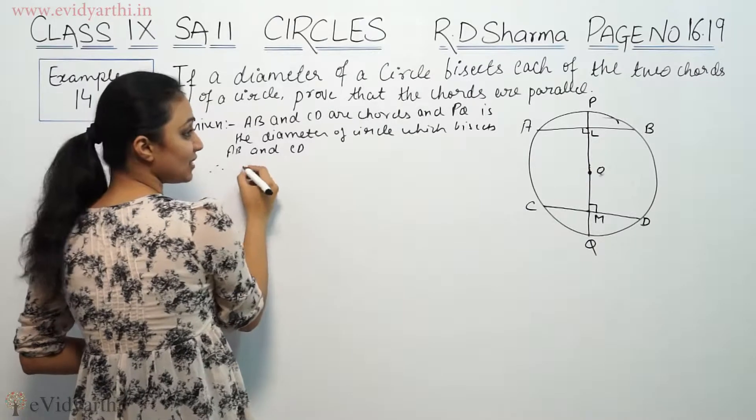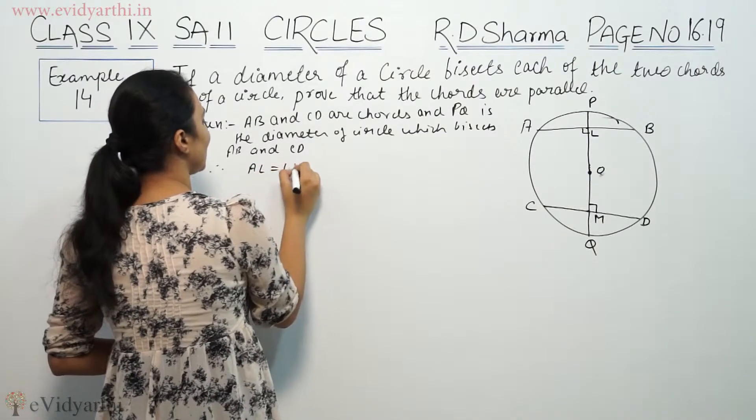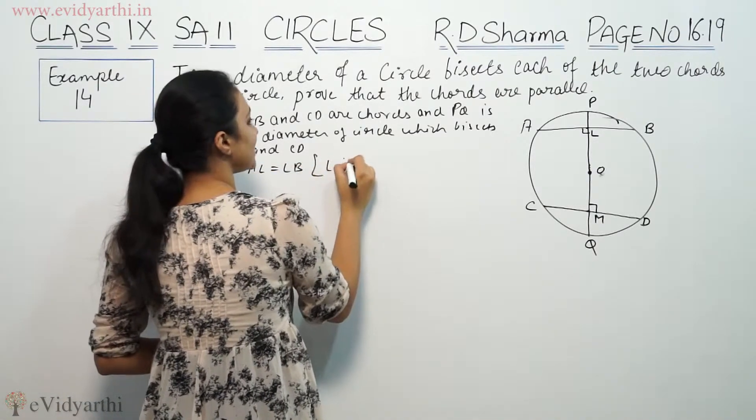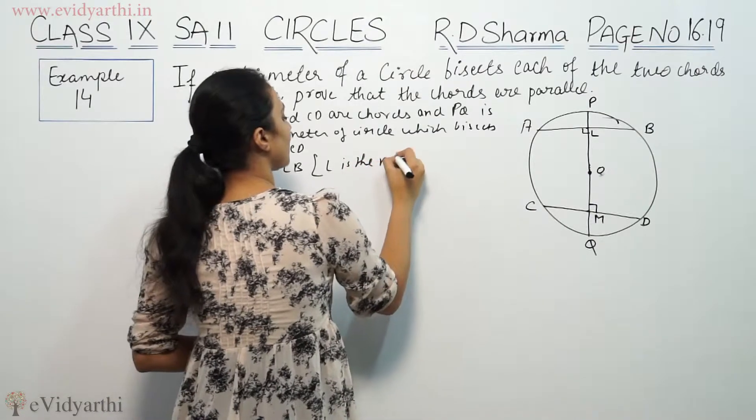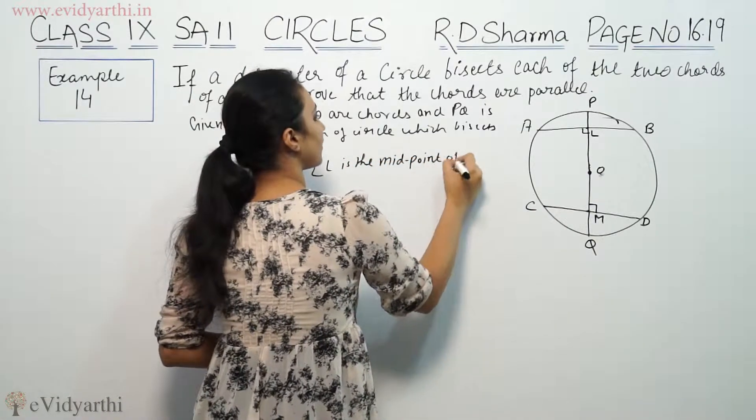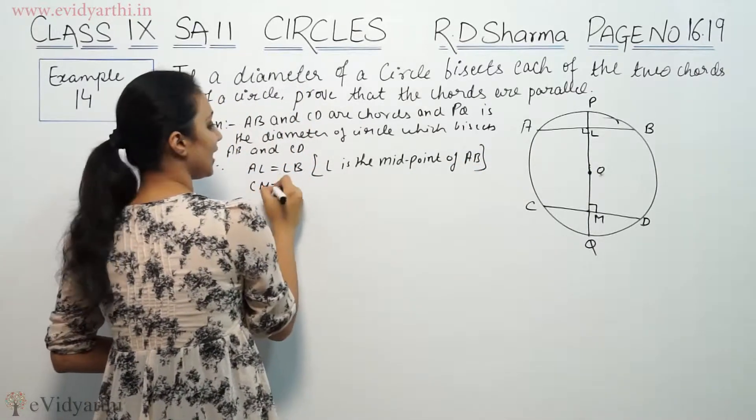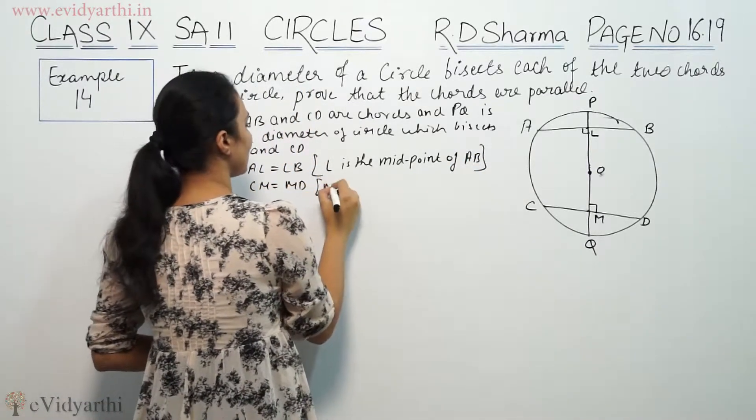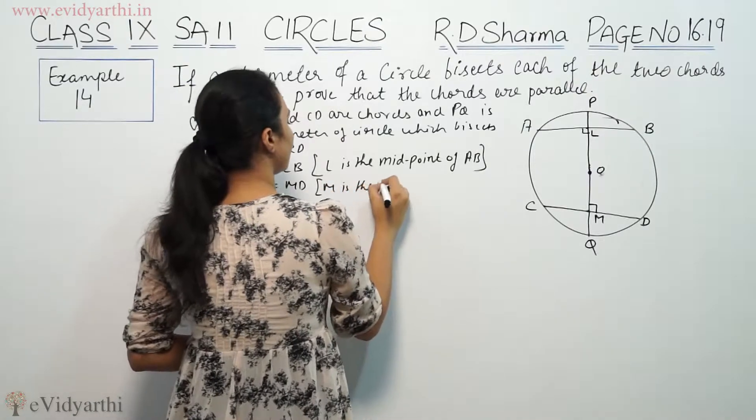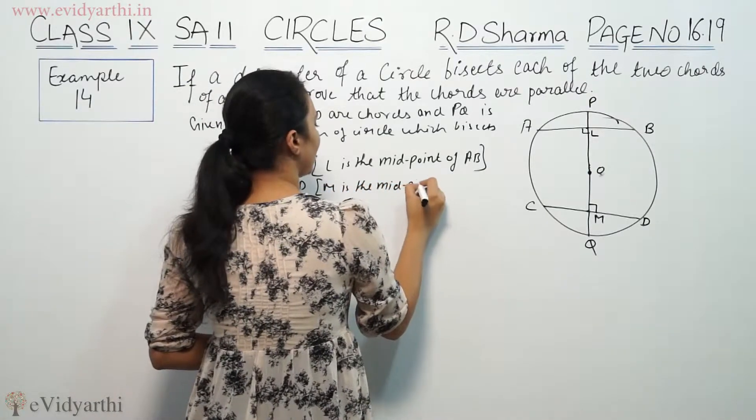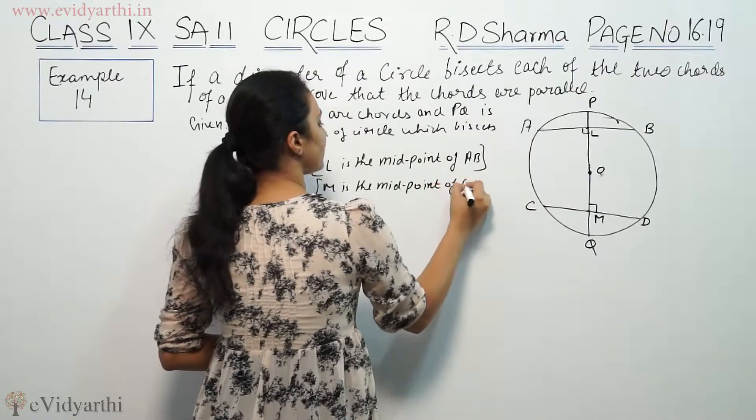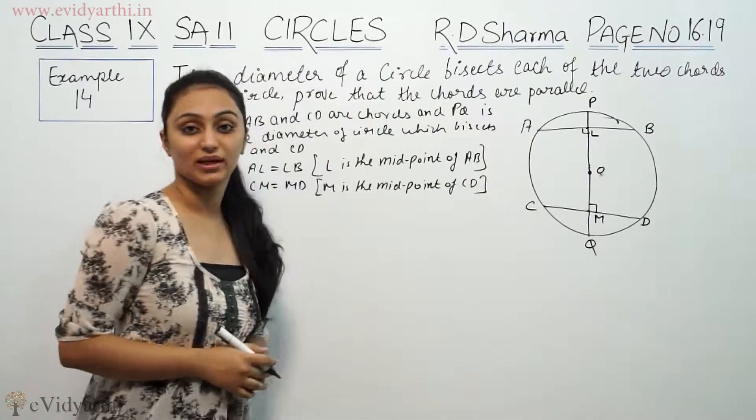Therefore, if the diameter bisects AB, AL is equal to LB. That means L is the midpoint of AB. And CM is equal to MD. That means M is the midpoint of CD.